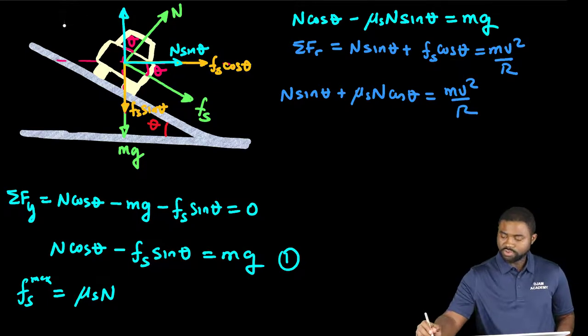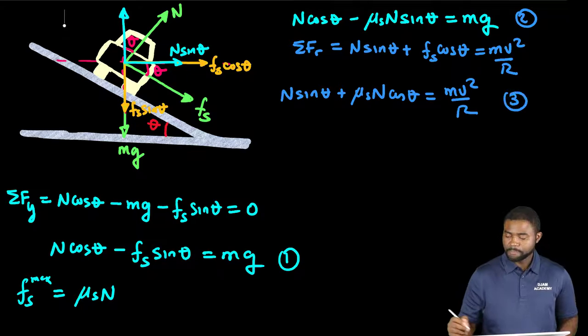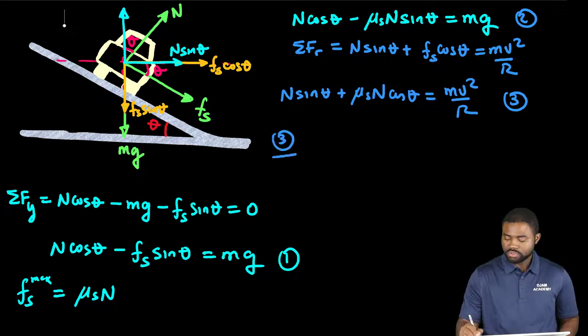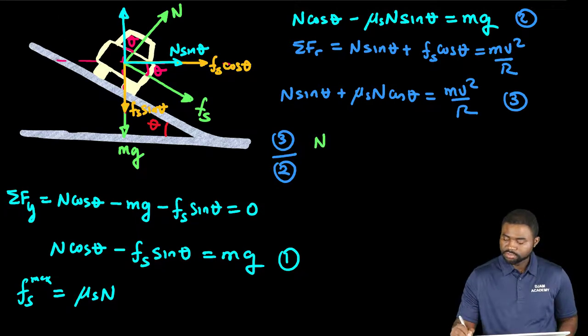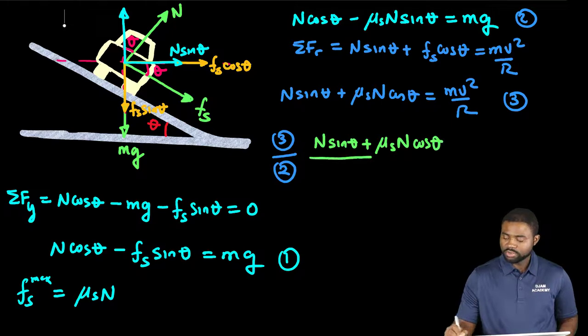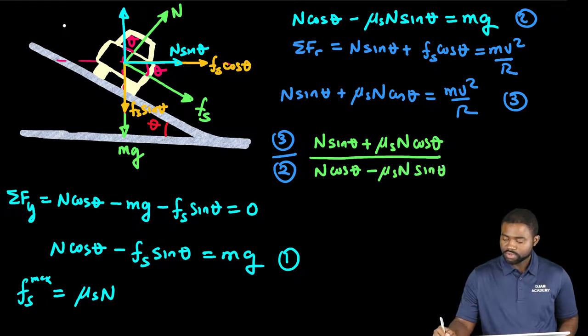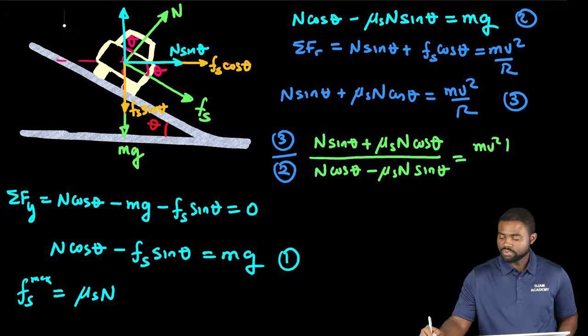This is equation 2 and this is equation 3. We can divide equation 3 by equation 2. We will have N sine theta plus mu_s N cosine theta divided by N cosine theta minus mu_s N sine theta equal to m v squared over R all divided by mg.